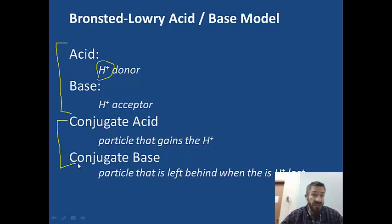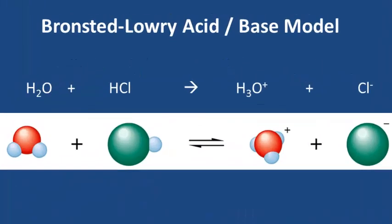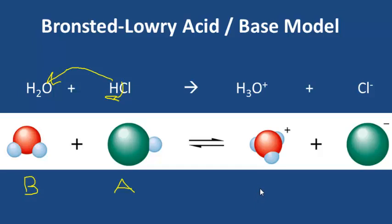As we write reactions, we'll use A for acid, B for base, CA for conjugate acid, and CB for conjugate base. In this first example, water and hydrochloric acid react to form hydronium ion and chloride ion. The H is transferred from HCl over to water, so HCl is the acid and water is the base. On the product side, hydronium is the conjugate acid because it's the water particle that accepted the proton, and chloride is the conjugate base — the particle left behind after the proton left.